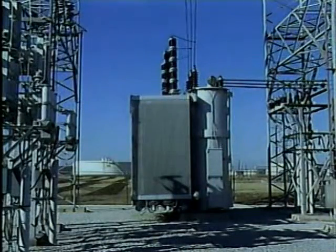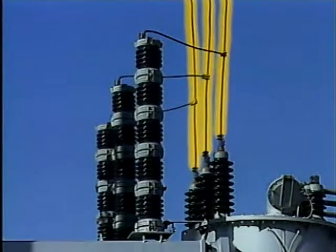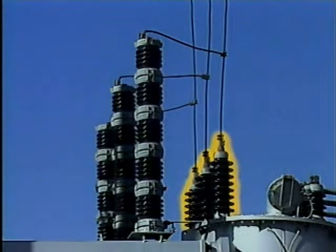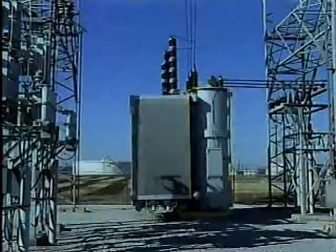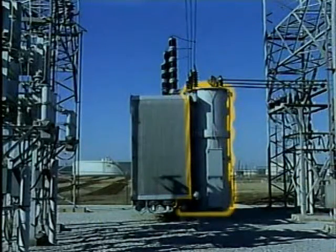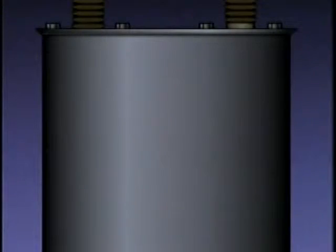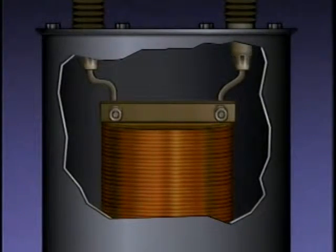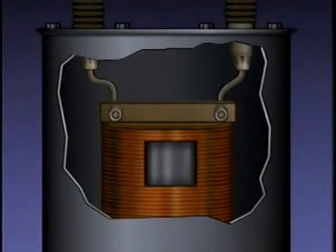Different kinds of transformers can be used to increase or decrease voltage from one electrical circuit to another, and the components that make up these transformers can vary as well. Let's take a look at some basic transformer components. Starting with this typical substation transformer: electricity enters the top of the transformer through power cables. Bushings are used to insulate the cables from the transformer casing. The casing provides a housing for the internal parts, and inside are the windings, usually mounted on an iron core which concentrates the magnetic field produced in the windings.